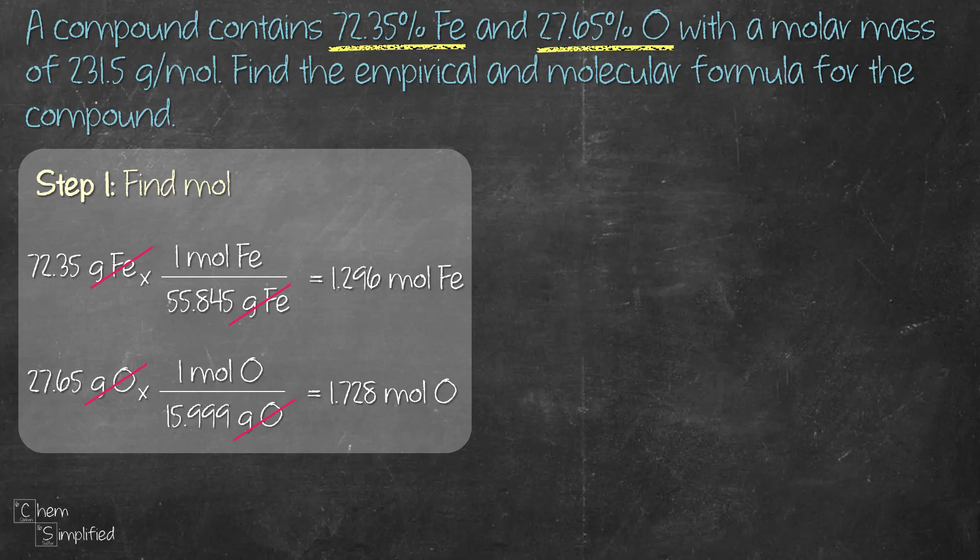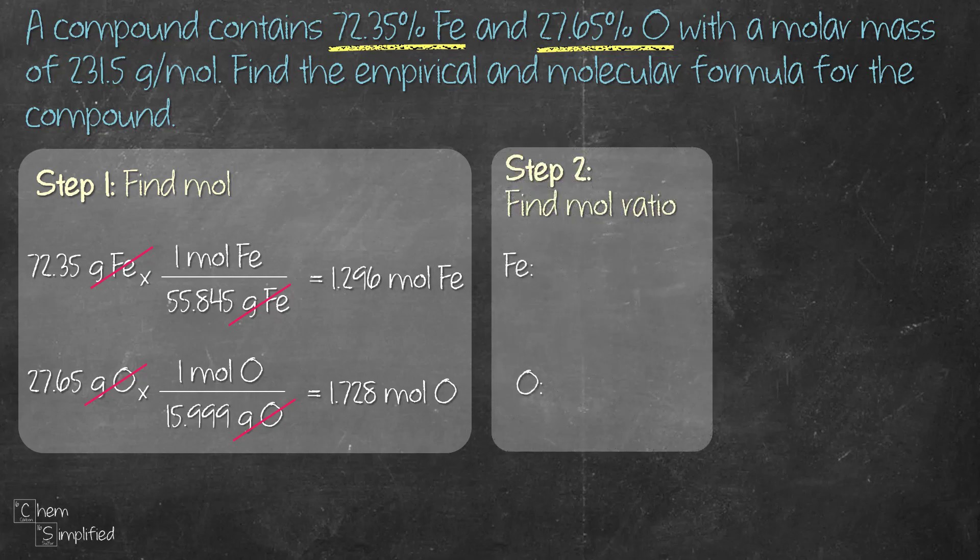Now that we're done with the first step, we're going to proceed to the second step which is finding the mole ratio. So using the mole that we have already calculated for Fe and O, we're going to divide with the smallest mole. Between 1.296 and 1.728, 1.296 is smaller. Since 1.296 is the smallest value, we divide both of the mole with 1.296 and then we get 1 for Fe and 1.33 for O.